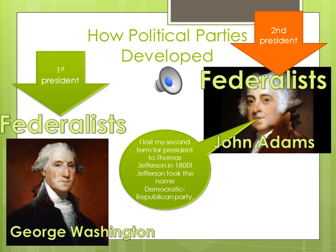In 1800, the Federalists finally lost power when Adams was defeated by Thomas Jefferson, who was an Anti-Federalist. Jefferson's supporters evolved and changed their name to the Democratic-Republican Party, and they started to win the next few elections. The country grew and changed, and so did the political parties — evolving and growing from its infancy.